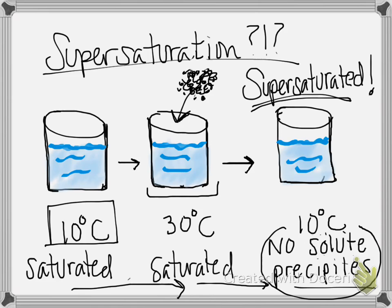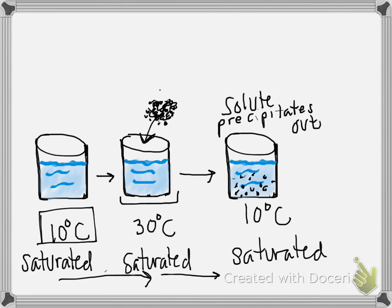If solute precipitates out when you cool the solution back down, it is not supersaturated. It's just a saturated solution with some chunks on the bottom. So if we go through that scenario again, and we take our saturated solution at 10, heat it to 30 and add more solute, and then cool it back down to 10, but in this case the solute precipitates out, we do not have a supersaturated solution.